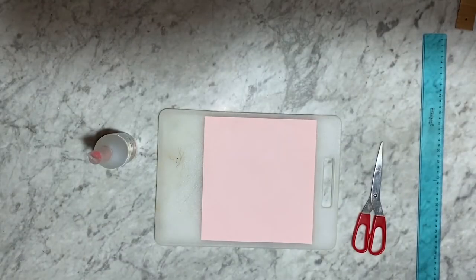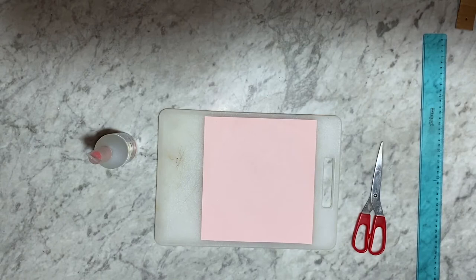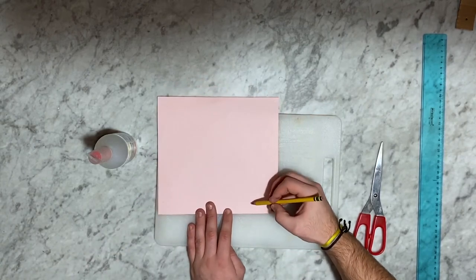We draw the beak of the animal that we want to make. We cut it out and use it to draw three identical ones.